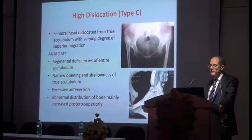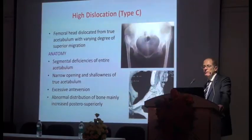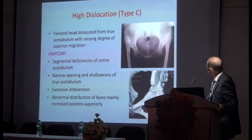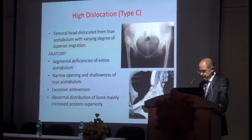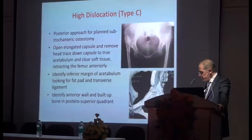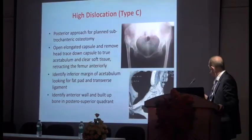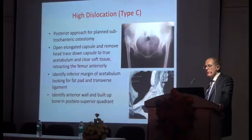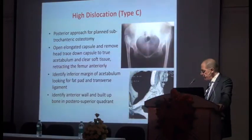Type C is the interesting one — this is really a femoral problem, not an acetabulum problem. The femoral head is located away from the true acetabulum at varying degrees of superior migration. The anatomy includes segmental deficiency of the entire acetabulum, a narrow opening, shallowness of the true acetabulum, excessive anteversion, and an abnormal distribution of bone. The bone has been deposited posteriorly in the acetabulum and there's normally a big nubbin of bone there which you have to breach when you start reaming. The approach is posterior and we plan a sub-trochanteric osteotomy. We use an SROM, prepare the femur first, put the sleeve in, then do the osteotomy underneath the sleeve and bring the head down to determine how much femur to remove. To do the acetabulum, open the elongated capsule and trace down to the joint.